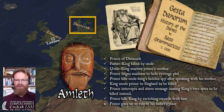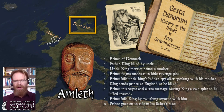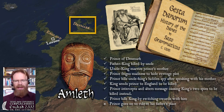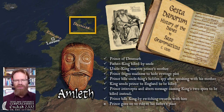Amleth is a prince of Denmark whose father, the king, is killed by his brother — Amleth's uncle. This uncle-king marries Amleth's mother. In order to keep from being killed as a potential avenger, an enemy of the new king, Amleth has to pretend to be crazy in order to hide his revenge plot.